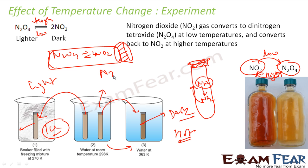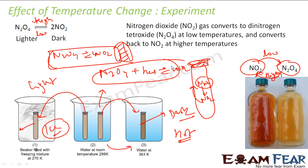This reaction, if you want, you can write it as: N2O4 + heat gives 2 NO2. If I have the mixture and I provide more heat, you get more NO2 — that is the darker color. You decrease the temperature, the equilibrium shifts in the backward direction, and you get more N2O4 — which is lighter.